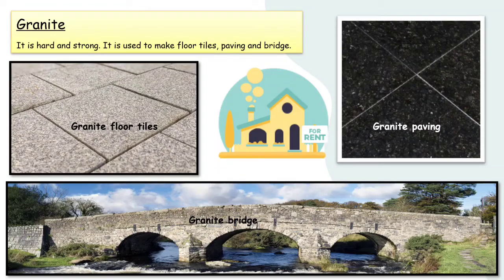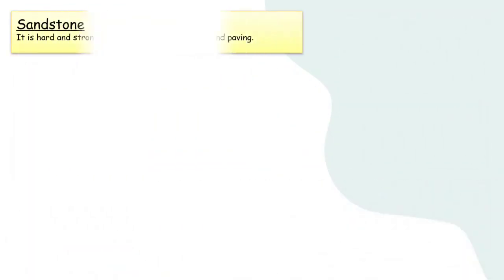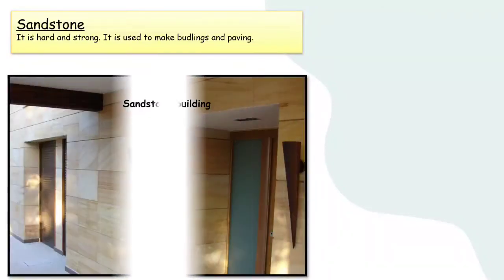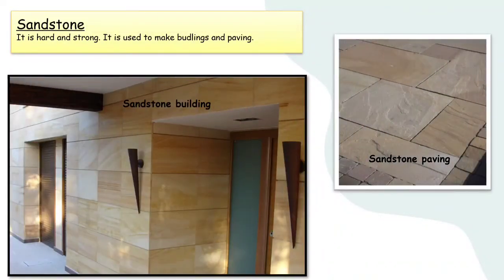Another type is sandstone. Sandstone is hard and strong. It is used to make buildings and paving. Here are examples of a sandstone building and sandstone paving.